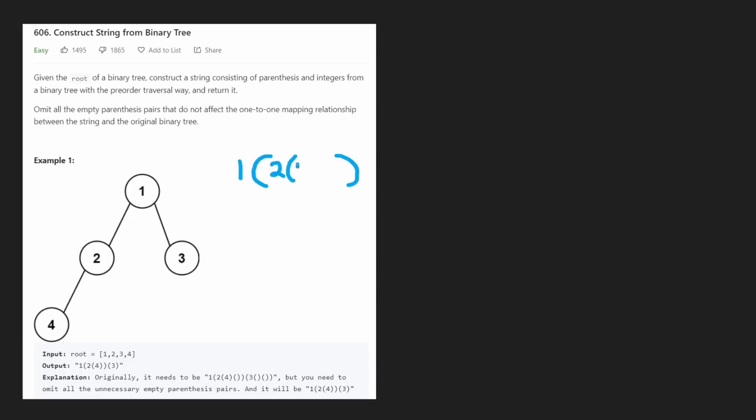In this case, it'll just be a single four in a set of parentheses. And then we want to do the same thing for the right subtree. But there is nothing there. But let's just put an empty set of parentheses for now.